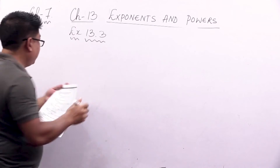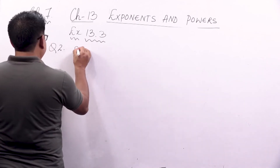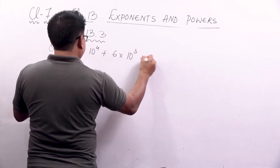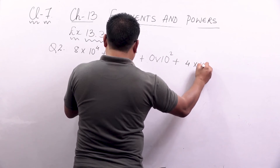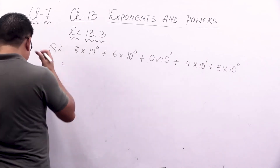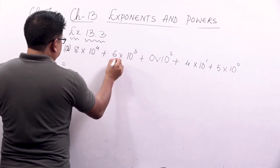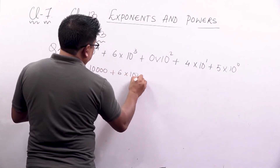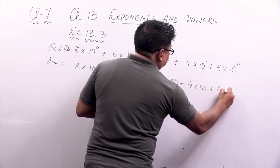The next question is question 2: find the number from each of the following expanded forms. So this is just the opposite of question 1 which we just did — the expanded form is given, and from it we have to find the number. For question A: 8 into 10000, plus 6 into 1000, plus 0 into 100, plus 4 into 10, plus 5 into 1.